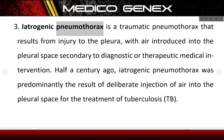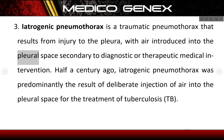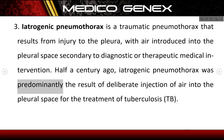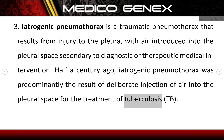Iatrogenic pneumothorax is a traumatic pneumothorax that results from injury to the pleura, with air introduced into the pleural space secondary to diagnostic or therapeutic medical intervention. Half a century ago, iatrogenic pneumothorax was predominantly the result of deliberate injection of air into the pleural space for the treatment of tuberculosis (TB).